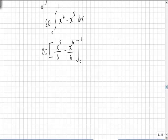So substituting in our 1 and 0 we get 20, 1 to the 5 is 1 over 5 minus 1 to the 6 is also 1 over 6. Substituting 0 in would actually generate 0.